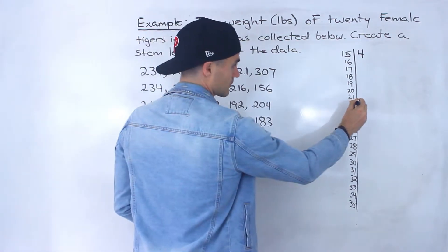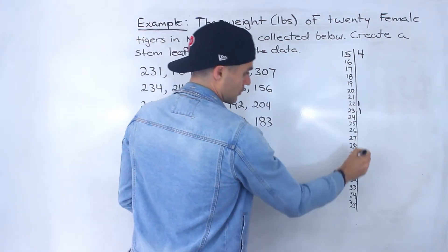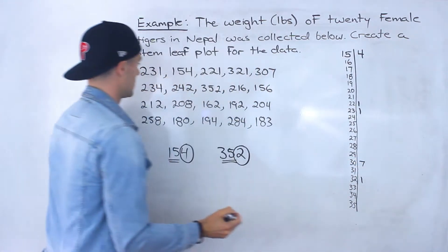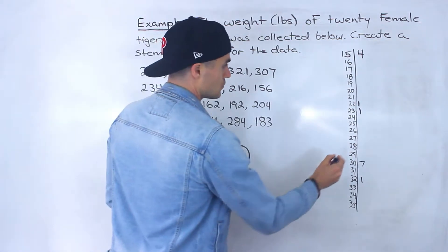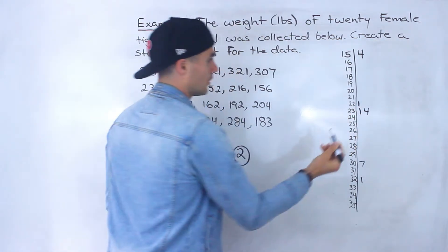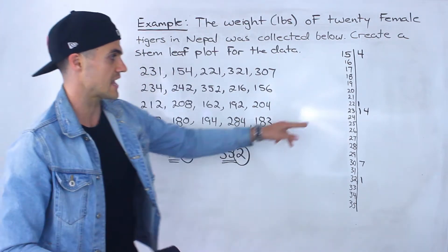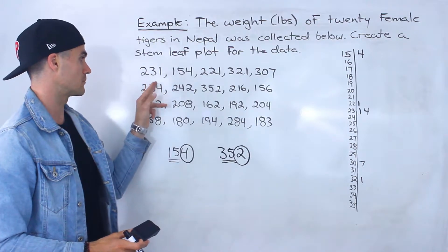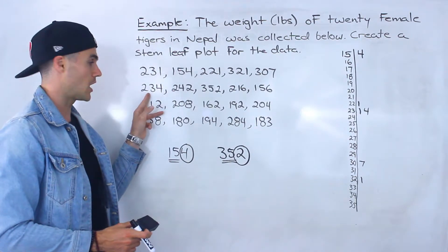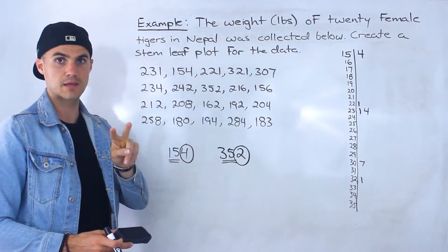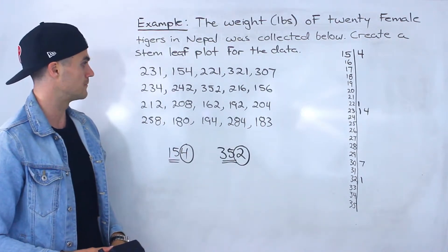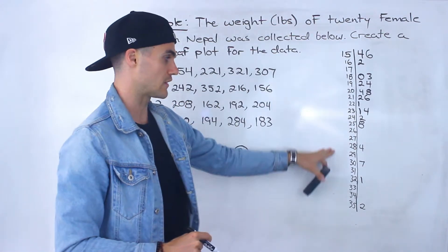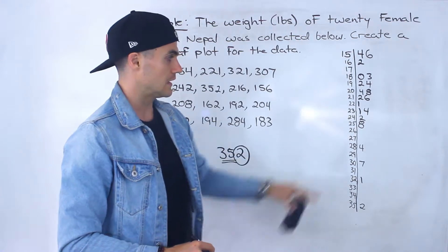For 321, that would go in the 32 stem row. For 307, that would go in the 30 row. For 234, that goes in the same 23 row as 231, because both observations have the same first two digits — 2 and 3. We continue filling in the rest of the leaves with the rest of the data to get the complete stem-leaf plot.